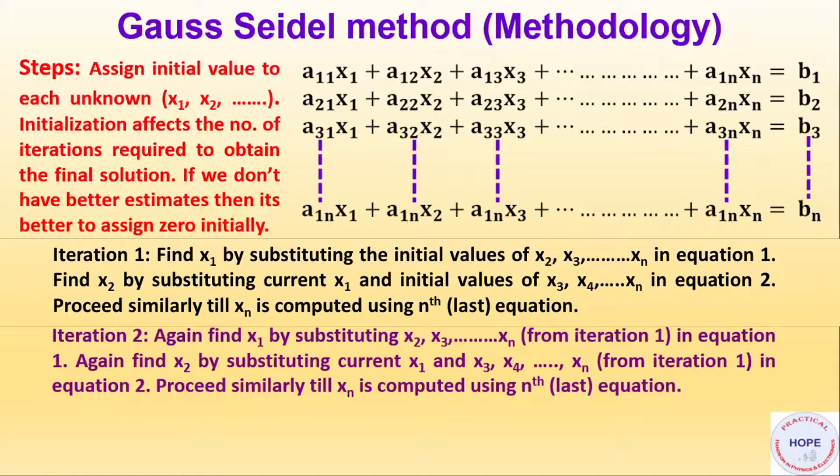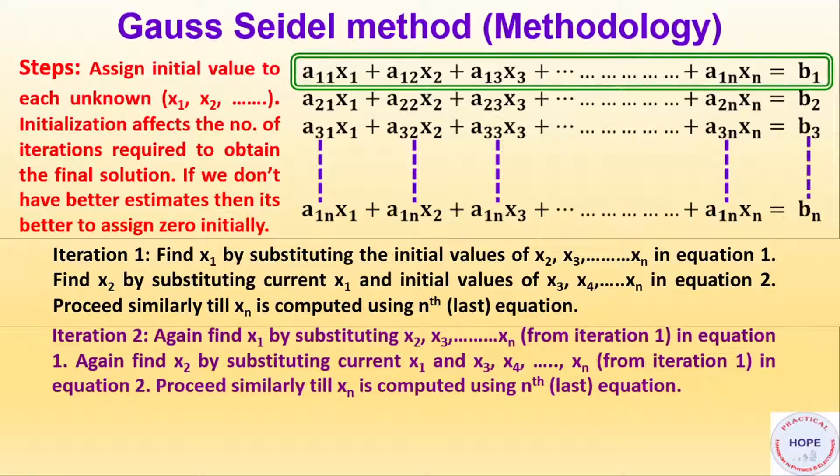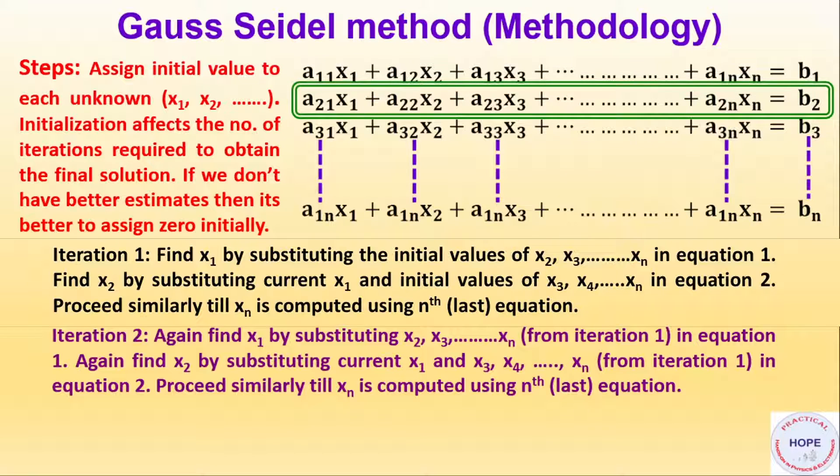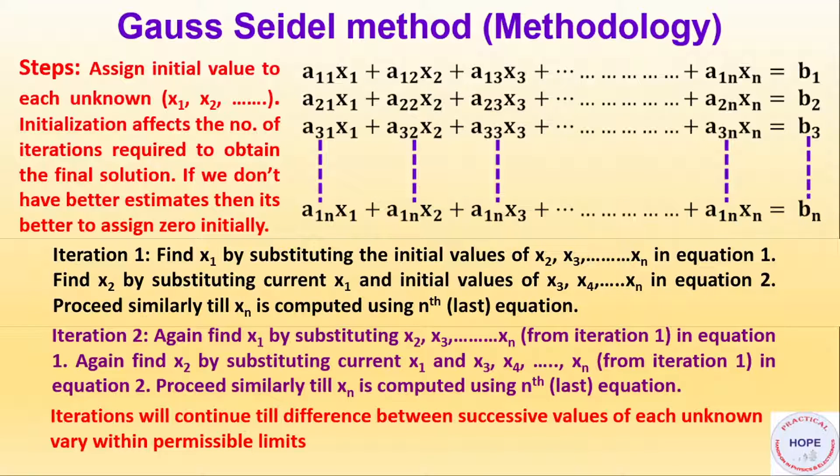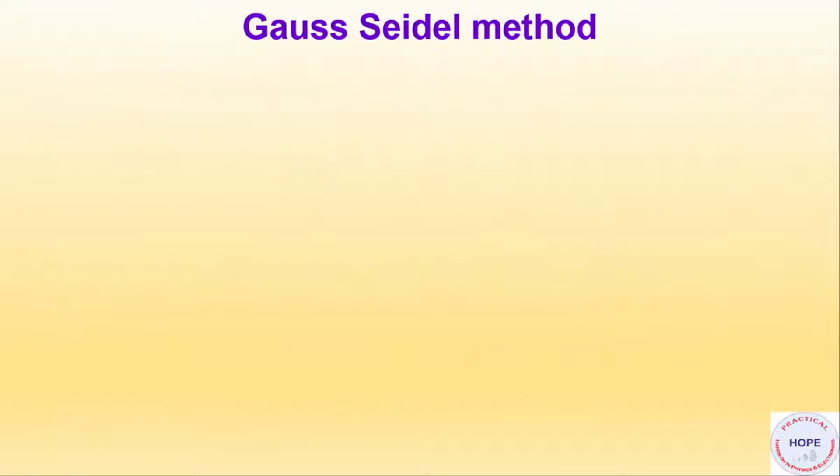Then iteration 2. Again find x1 by substituting x2, x3 till xn from iteration 1 in equation 1. Again find x2 by substituting current x1 and x3, x4 till xn from iteration 1 in equation 2. Proceed similarly till xn is computed using nth or last equation. Iterations will continue till difference between successive values of each unknown vary within permissible limits.